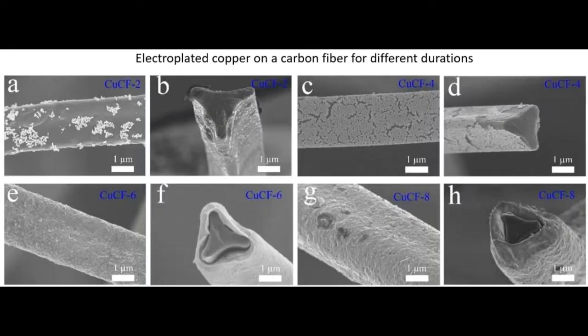These SEM micrographs show the surface of the copper metal electroplated on top of a carbon fiber at different electroplating times. Here you can see the variations in the coverage of the carbon fiber by the copper metal.